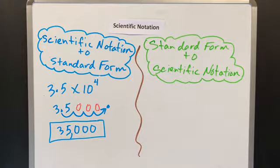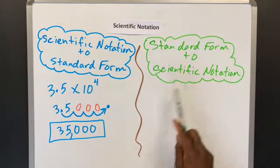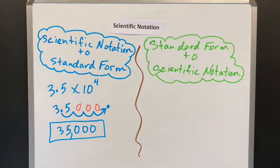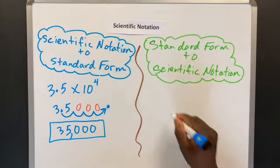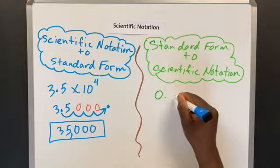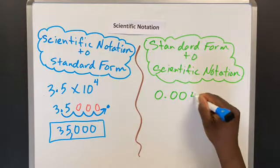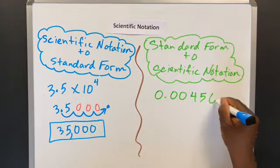Now we're going to solve a problem that involves converting a number written in standard form to scientific notation. So this time I'm going to start with a very small number. That's a decimal, 0.00456.